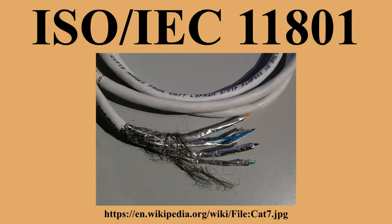The standard defines several classes of optical fiber interconnect. OM-1: multimode fiber type, 62.5 micrometers core, minimum modal bandwidth of 200 MHz·km at 850 nanometers. OM-2: multimode fiber type, 50 micrometers core, minimum modal bandwidth of 500 MHz·km at 850 nanometers.